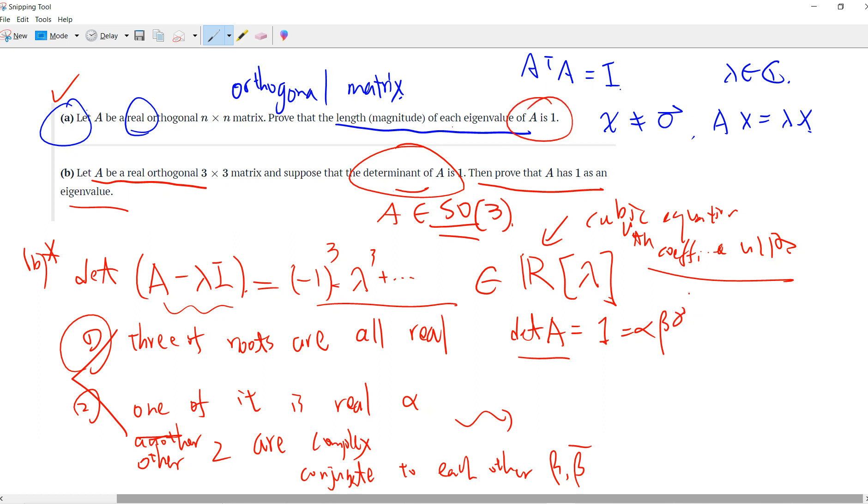There are eight possibilities: alpha can be 1 or minus 1, beta can be 1 or minus 1, gamma can be 1 or minus 1. But the problem is that their product needs to be 1. So if they are all 1, then it's good. Otherwise, there are two that are minus 1 and one that is 1. So you always get at least one eigenvalue equal to 1.